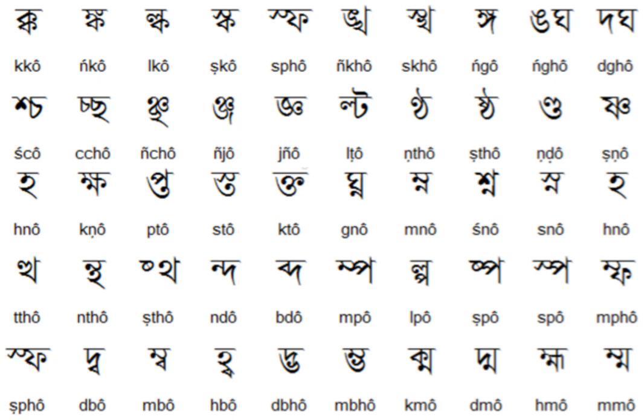According to Dr. G.C. Goswami, the number of two-phoneme clusters is 143, symbolized by 174 conjunct letters. Three-phoneme clusters are 21 in number, which are written by 27 conjunct clusters.